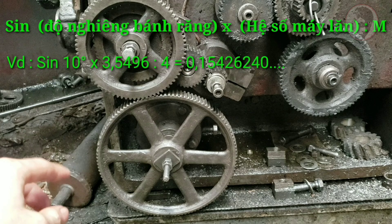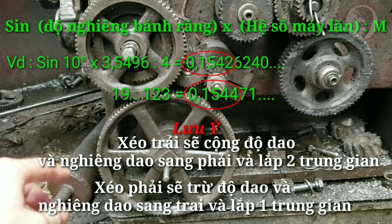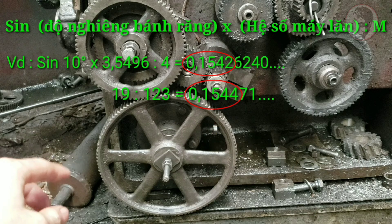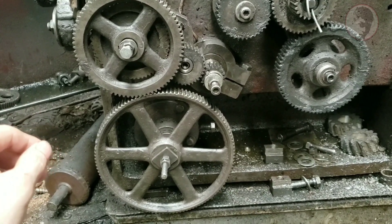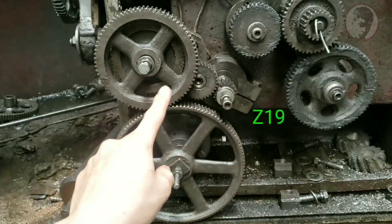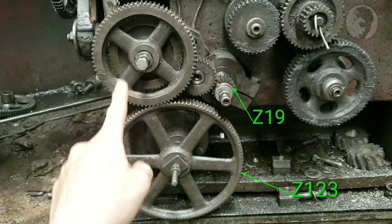Bây giờ mình sẽ đi tìm 2 cặp nhông chia cho nhau để ra kết quả gần đúng nhất với kết quả V-size vừa tính. Ở đây mình lấy nhông 19 chia nhông 123 bằng 0.154471 — gần đúng nhất với kết quả V-size. Nên mình sẽ lắp cặp nhông 19 và 123, còn trung gian giữa 2 nhông thì mình sẽ gắn 2 trung gian.